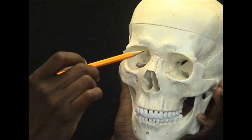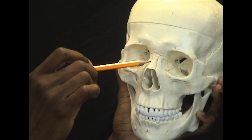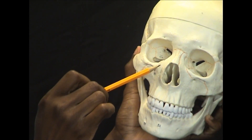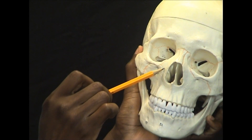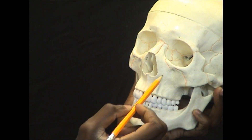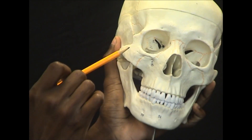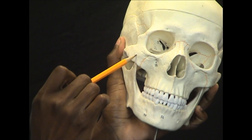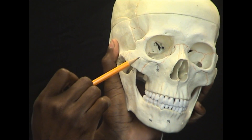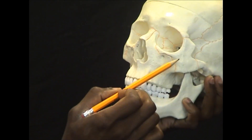Now, the first facial bone is the nasal bone. The nasal bone is joined to the lacrimal bones — you have two lacrimal bones, one on each side. This is the zygomatic bone — two zygomatic bones.